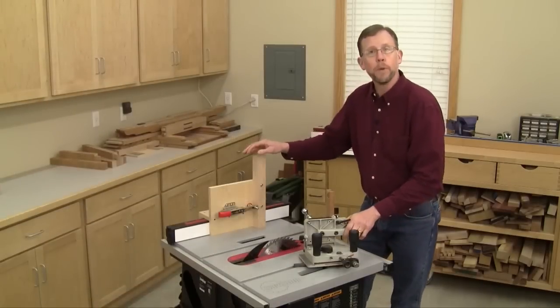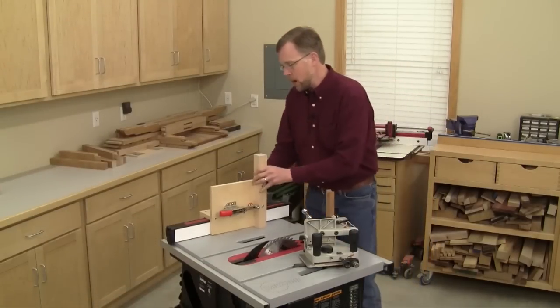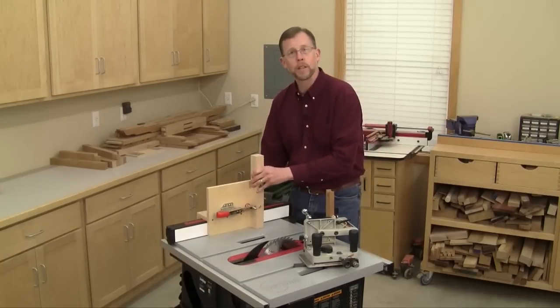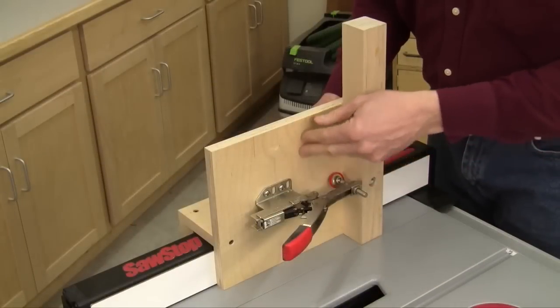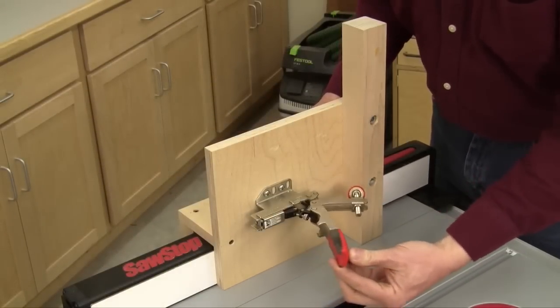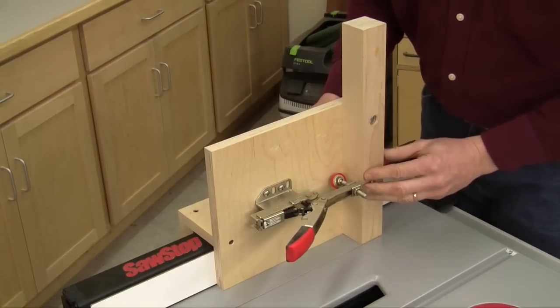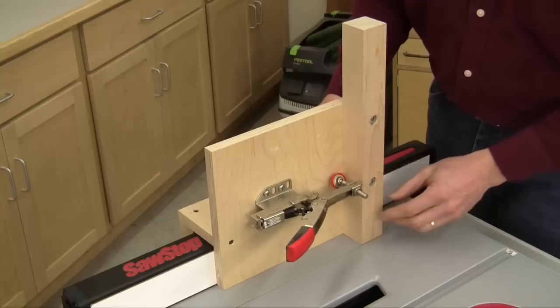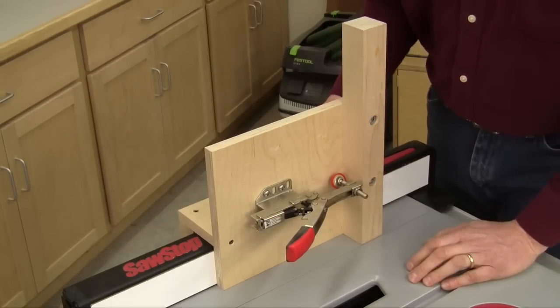You can also build a tenoning jig like I've made here from scrap. Mine is nothing more than a housing that fits over the rip fence and slides back and forth on it. It's got this tall fence for supporting work pieces and I've installed this toggle clamp to hold them. Then there's this backup support piece. This will get chewed up along the bottom as you're making tenons, so it's a good idea to bolt it to your jig so you can replace it when it wears out.